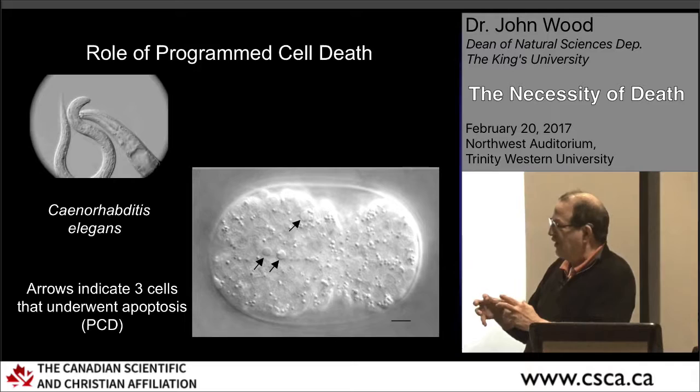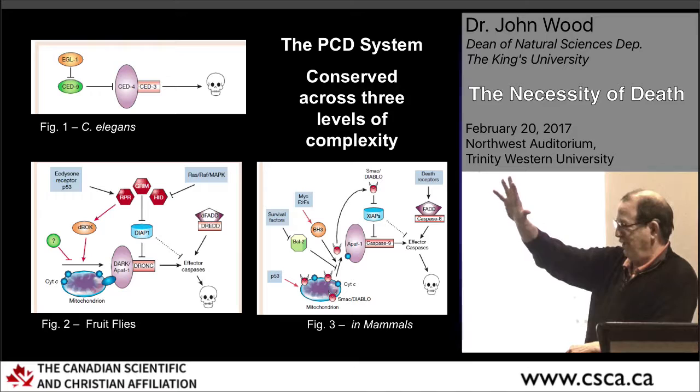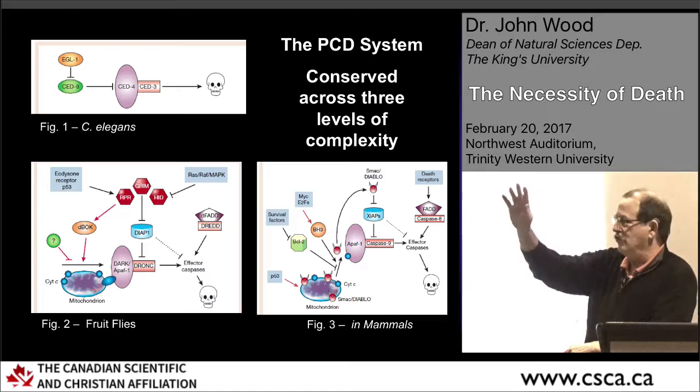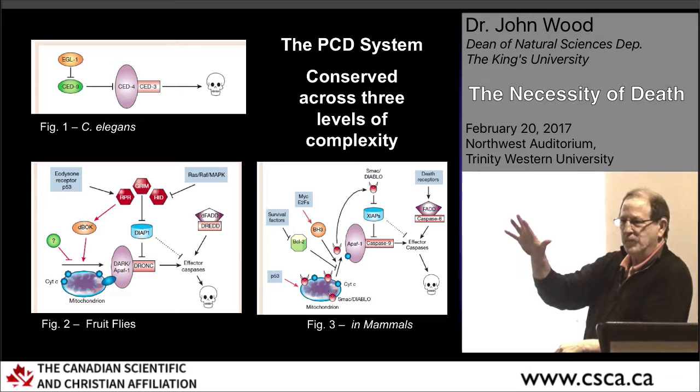Think about a duck's foot. Now think about a chicken's foot. Think about a tree leaf — it could be deciduous, like our big leaf maple here, or it could be a coniferous tree. How does that shape happen? It happens because of programmed cell death.